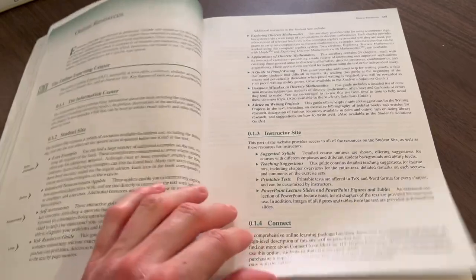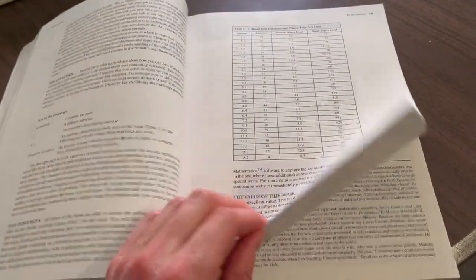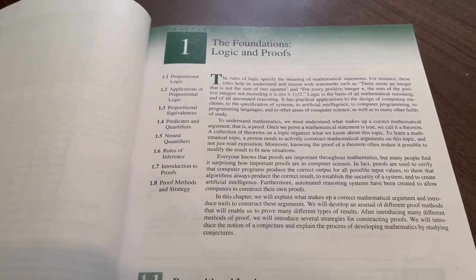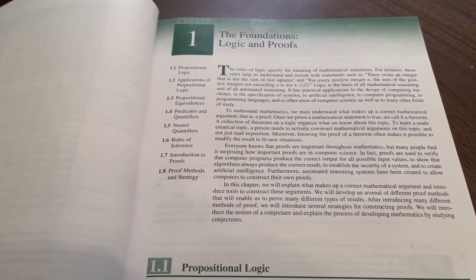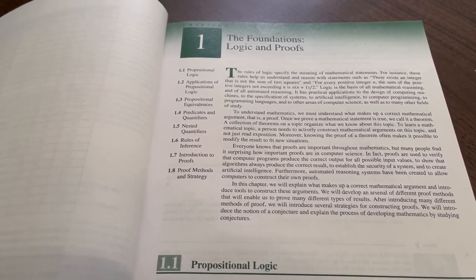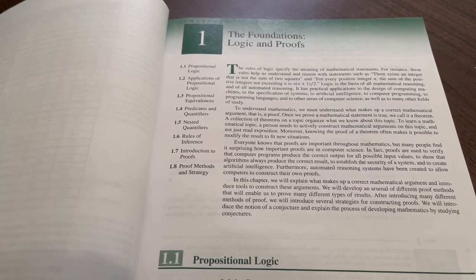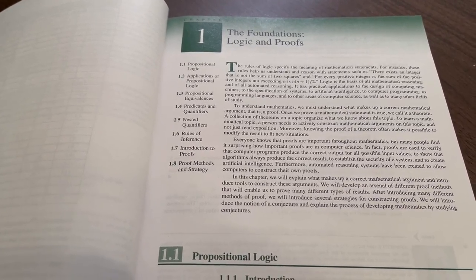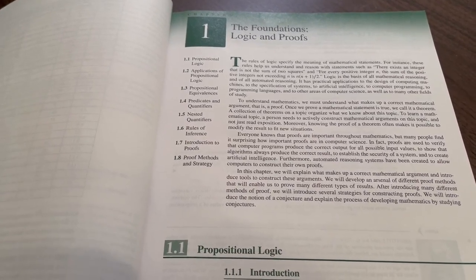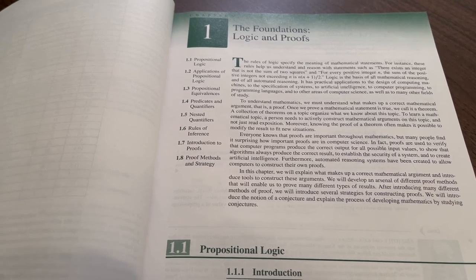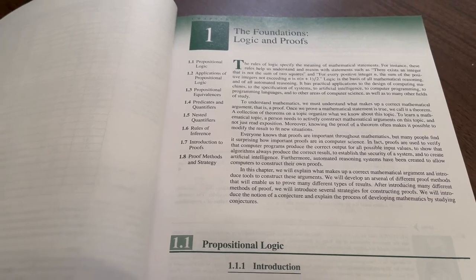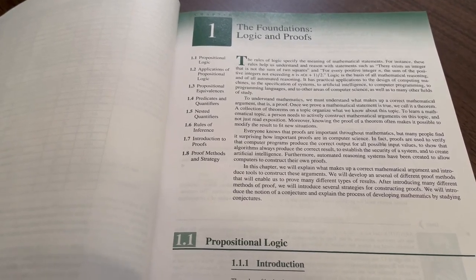So let's turn to Chapter 1 and just preview this. So Chapter 1 is the Foundations, Logic, and Proofs. The textbook says the rules of logic specify the meaning of mathematical statements. For instance, these rules help us understand and reason with statements such as there exists an integer that is not the sum of two squares. And for every positive integer n, the sum of the positive integers not exceeding n is n times the quantity n plus 1 divided by 2. Logic is the basis of all mathematical reasoning and all of automated reasoning. So you can see why a software engineer definitely needs to learn some logic.